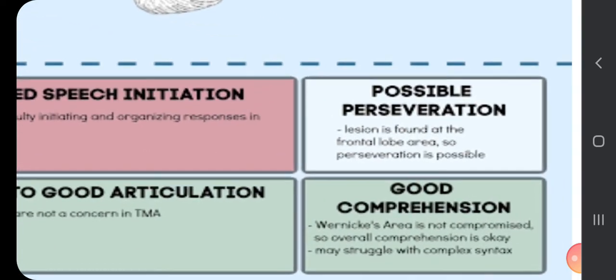The possible perseveration. The lesion is found at the frontal lobe area, so the perseveration is possible. Perseveration is a phenomenon in which the person keeps on giving a certain response even after the stimuli is removed, and they have a lot of difficulty in stopping that response.